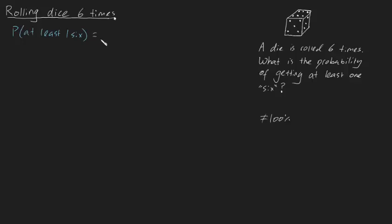So to express that mathematically, we can write this as the probability of getting exactly one six plus the probability of getting exactly two sixes plus the probability of getting exactly three sixes plus dot dot dot plus the probability of getting exactly six sixes after six rolls.